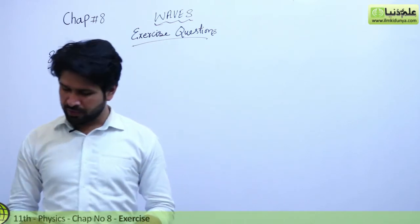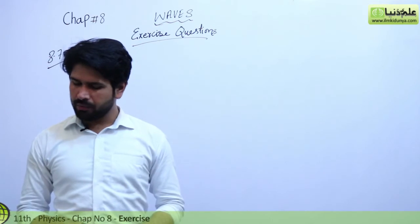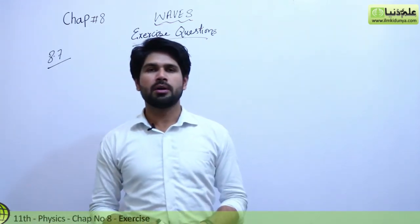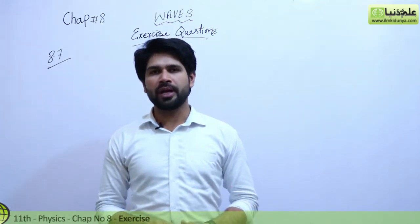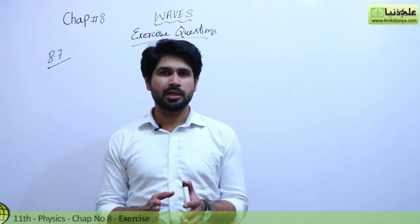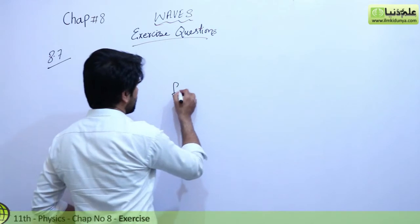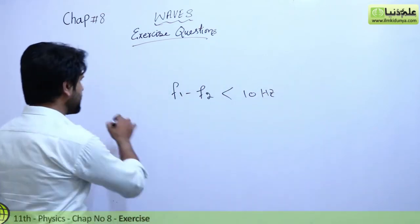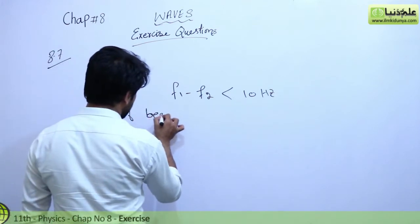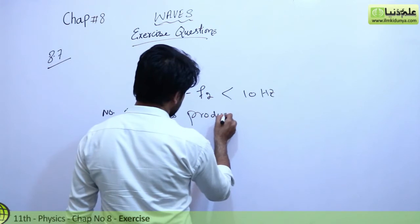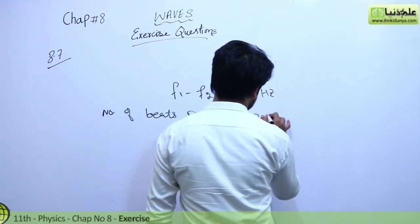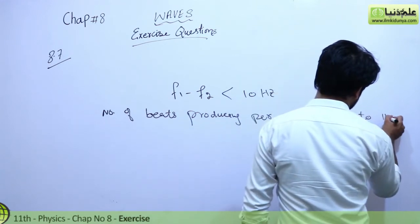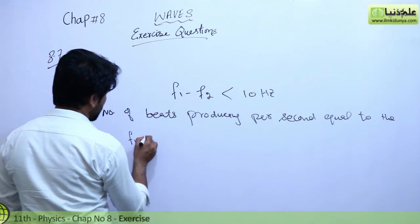How are beats useful in tuning musical instruments? We have already read about beats. Beats are formed when the difference of the frequencies of two sounding bodies is less than 10 Hz. The number of beats produced per second equals F1 minus F2.